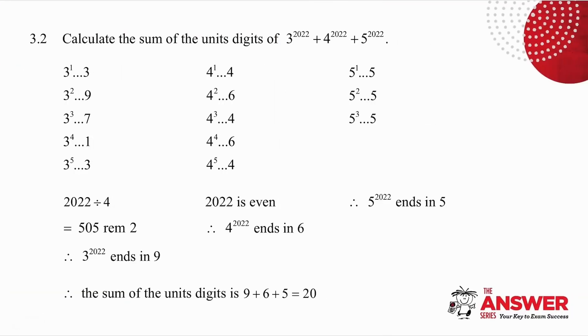In the next question, they've asked me for the sum of the units digits of this particular sum. Again, if I use a calculator, it tells me an error. So we need to start with something small. Let's start with 3^2022.